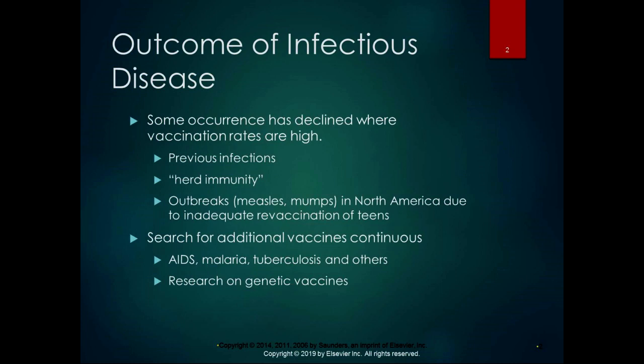With infectious diseases, the occurrence of infectious disease has declined where vaccination rates are high, which is ideal. Like polio and measles, where you have high vaccination rates, you create what's called herd immunity, where a high percentage of the population is vaccinated or has experienced prior infection, which decreases the chance of acquiring and spreading an infectious disease.